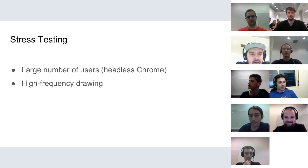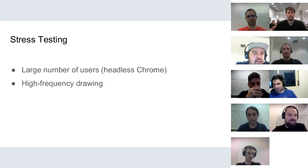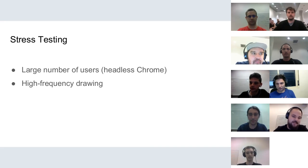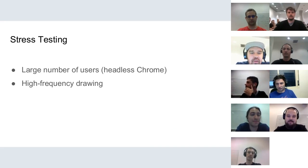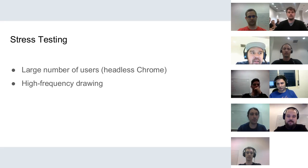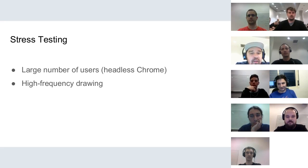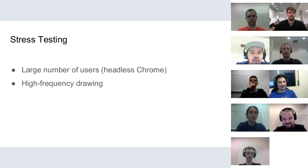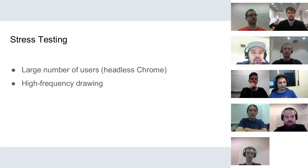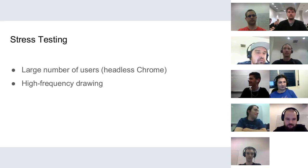With all the features developed in the HTML5 client and the new features we keep developing, we pay special attention to performance. One of the things we use is stress testing — for example, we start up a large number of headless Chrome instances and point them to one server to see how the client performs with a large number of users. Another example is high-frequency drawing to the whiteboard to see how the client works under that situation. We do all these things alongside development to make sure the final version of each new feature always performs well under high load.